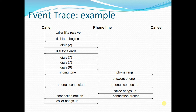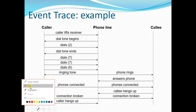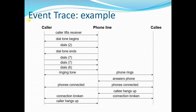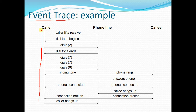The event trace diagram is just like a sequence diagram. The vertical lines represent class names or objects, so you can create an event trace diagram from a class diagram. You draw the lines for the objects or for classes, so these are different classes.